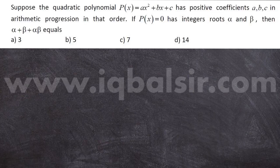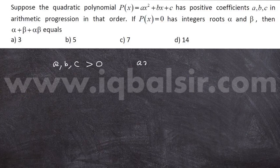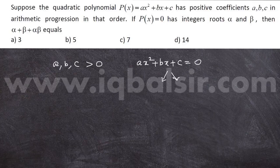The question looks very easy, but it's a slightly tricky one. The first thing we need to know is that since a, b, c are positive numbers, the roots of the quadratic equation ax² + bx + c = 0 will be negative. So if the roots are alpha and beta, both alpha and beta will be negative. To get 0, we should have x values as negative.